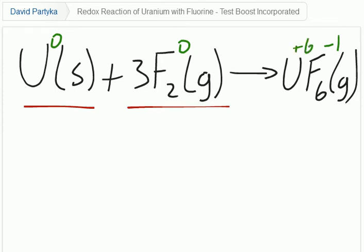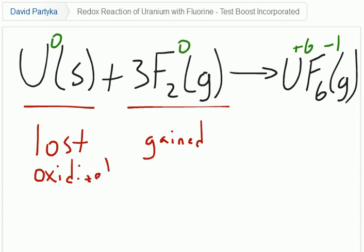So, with that being said, what clearly has occurred is that uranium metal has lost electrons, fluorine has gained electrons to form uranium hexafluoride, and with this being the case, then uranium has been oxidized and fluorine has been reduced.